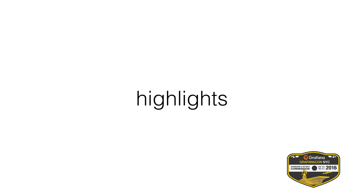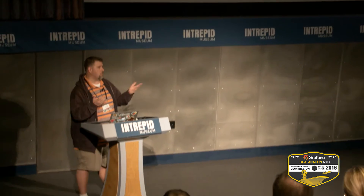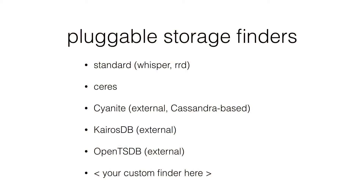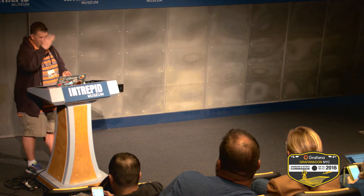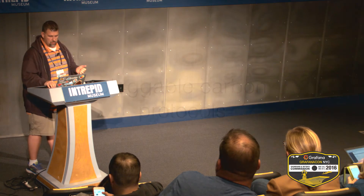Highlights of 1.0. A lot of these have technically been in the master code base for years, but if you're running 0.9 you never actually saw them. The big one for anybody that wants to move to master is pluggable storage finders. There are external ones out there already: Cyanite, which is based on Cassandra; KyrusDB, also based on Cassandra; OpenTSDB with HBase. Graphite can read from them on the backend and render the statistical transformations and serve it out to the users.